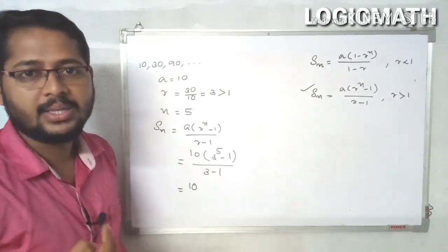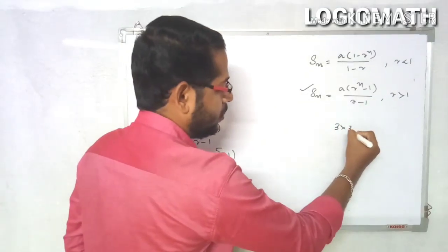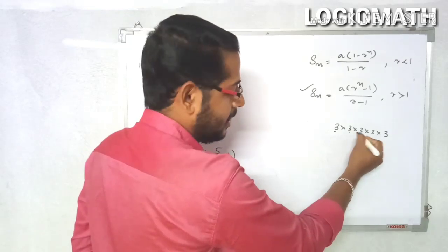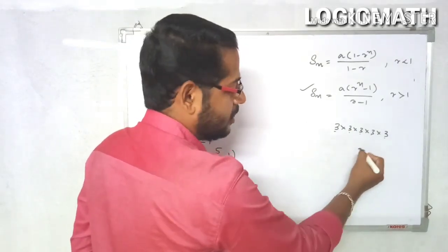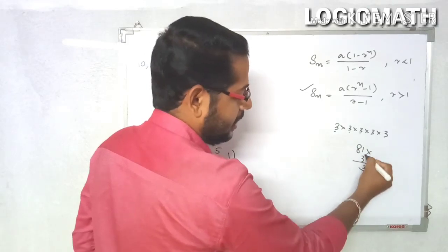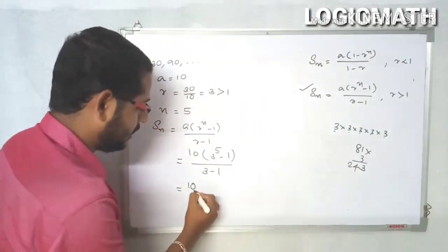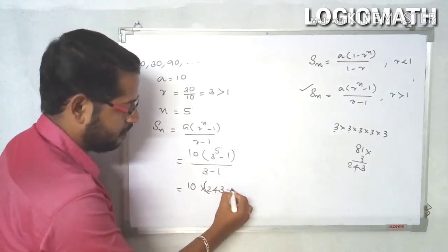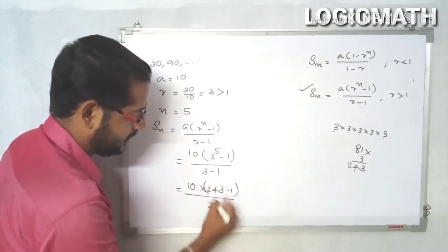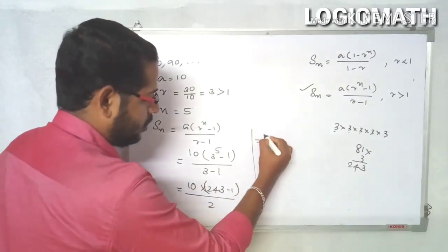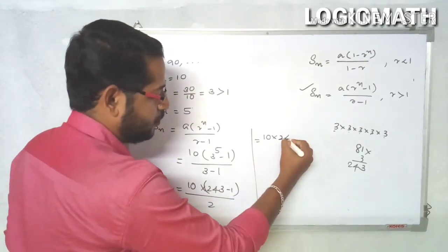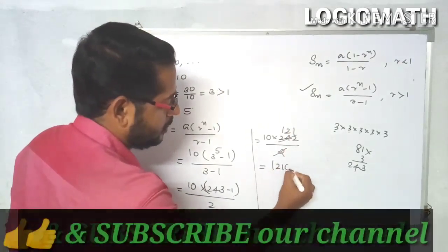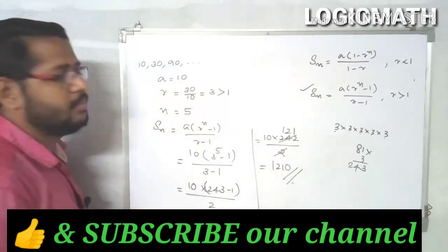3 raised to 5: 3 times 3 is 9, 9 times 3 is 27, 27 times 3 is 81, 81 times 3 is 243. So we have 10 into (243 minus 1) divided by (3 minus 1) — that is 10 into 242 divided by 2. Cancel: 242 divided by 2 is 121. So the answer is 10 into 121 equals 1210.